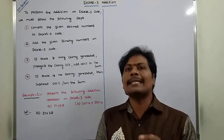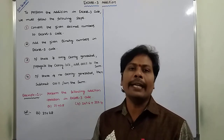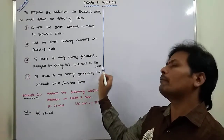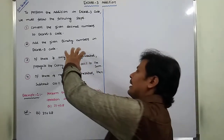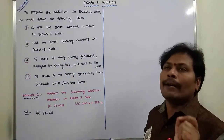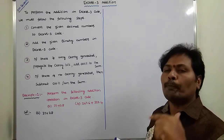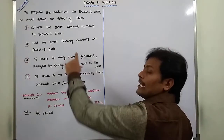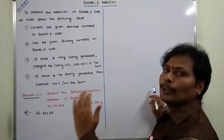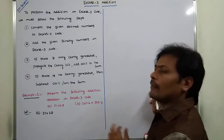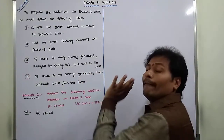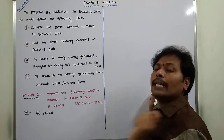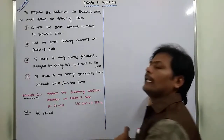Third point: if there is any carry generated, that carry is propagated, then add 0011 to the given sum. This is done when any carry is generated after adding four-bit groups of two XS3 code numbers — that carry is propagated to the next higher bits, then add 0011 to the given sum.